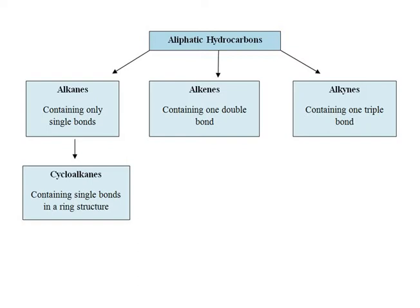On the other hand, alkenes — also called olefins — are unsaturated hydrocarbons with a double bond in their structure. The general formula for alkenes is CₙH₂ₙ, which means the number of hydrogen atoms is exactly double the number of carbon atoms.